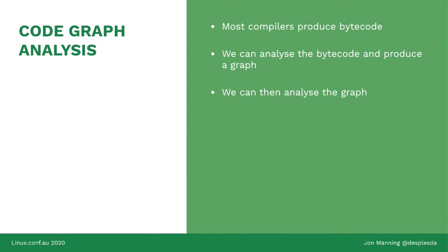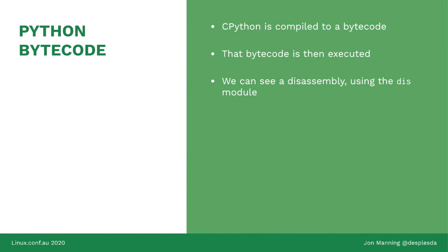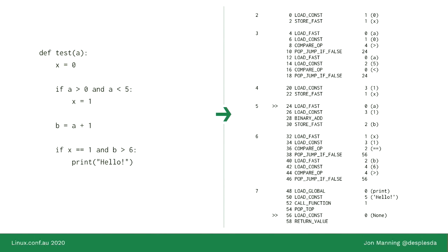We find every possible path through the program, symbolically execute every one of those paths, and detect paths that could never run. A line of code is unreachable if there are no paths that can go through that point. Compilers produce bytecode and we can take that bytecode, build a graph, and analyze it. CPython, the C implementation of Python, is compiled to bytecode — the dis module in Python can show you this disassembly. On the left is the buggy source code; on the right is the Python bytecode. When we say 'x is zero' we're loading the constant zero and storing it in the slot mapped to x.